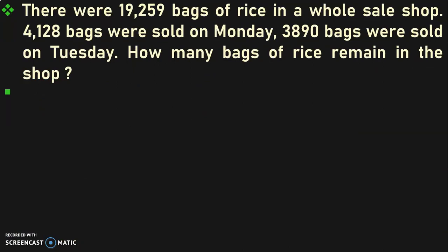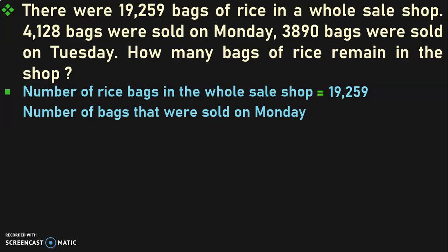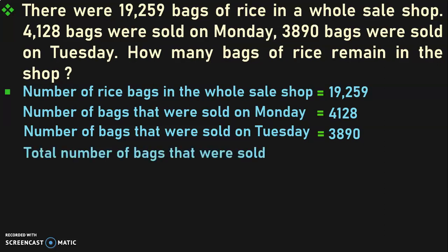Let us do the next sum. There were 19,259 bags of rice in a wholesale shop. 4,128 bags were sold on Monday and 3,890 bags were sold on Tuesday. How many bags of rice remain in the shop? Number of rice bags in the wholesale shop is equal to 19,259. Number of bags sold on Monday is 4,128 and on Tuesday is 3,890. Total number of bags sold is equal to 4,128 plus 3,890.